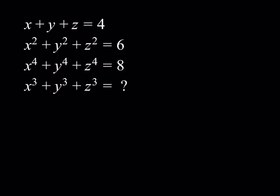So we do have x plus y plus z equals 4, x squared plus y squared plus z squared equals 6, x to the fourth plus y to the fourth plus z to the fourth equals 8, and we're supposed to find the sum of the cubes. We have three equations and three unknowns, so it should be solvable, ideally.